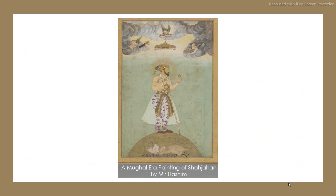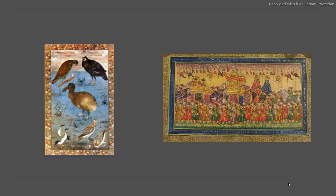This is a Mughal-era painting of Shah Jahan by Mir Hashim. These are two other paintings: one is a very minute, detailed scene of a royal procession, and the other depicts several different species of birds.